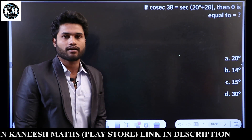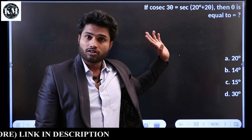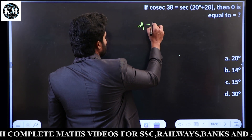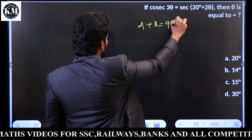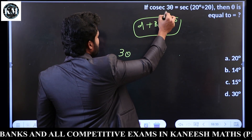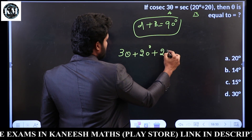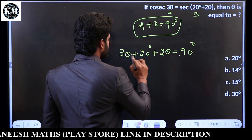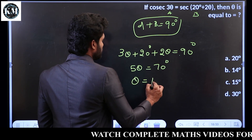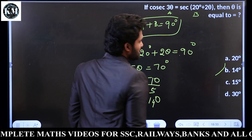To solve the sum in 5 seconds, use the rule: cos equals secant, cosecant equals secant — applying A plus B equals 90 degrees. Let's recap with video number 3's example: 3 theta plus 20 degrees plus 2 theta equals 90 degrees. So 5 theta equals 70 degrees, and theta equals 14 degrees. Easy!